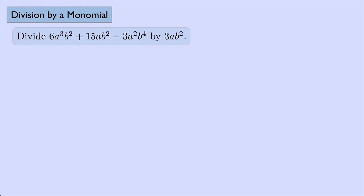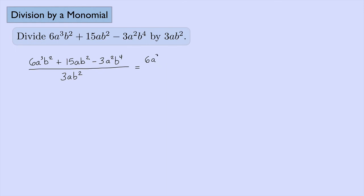Let's look at one more example: divide 6a cubed b squared plus 15ab squared minus 3a squared b to the fourth by 3ab squared. We write it as a fraction and break it apart: 6a cubed b squared over 3ab squared, plus 15ab squared over 3ab squared, minus 3a squared b to the fourth over 3ab squared.